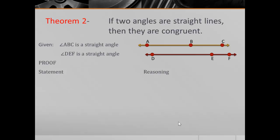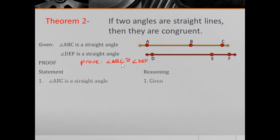Let's use that same logic and apply it to Theorem 2: if two angles are straight angles, then they are congruent. We're given that angle ABC is a straight angle and angle DEF is a straight angle, and what we need to prove is that angle ABC is congruent to angle DEF. Always look at what they want you to prove — we need to prove that two angles are congruent, so we're probably going to use the definition of congruent angles. Statement one: angle ABC is a straight angle, that's given. Statement two: the measure of angle ABC is 180, and that's by the definition of a straight angle — if an angle is a straight angle, then its measure is 180.